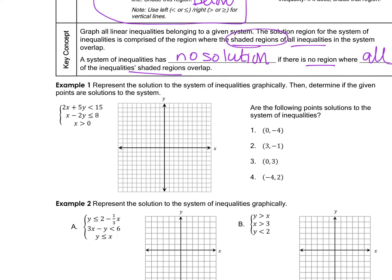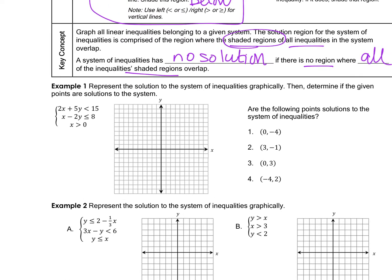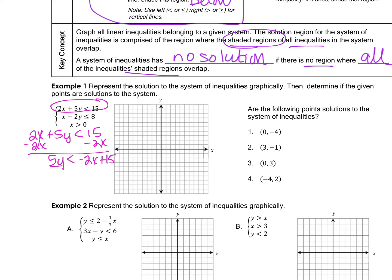In example one, we're graphing three different inequalities on the same graph. The first two are not in slope-intercept form, so I need to rewrite them. Starting with the first equation, I subtract 2x to get 5y < -2x + 15, then divide everything by 5 to get y < -2/5 x + 3.